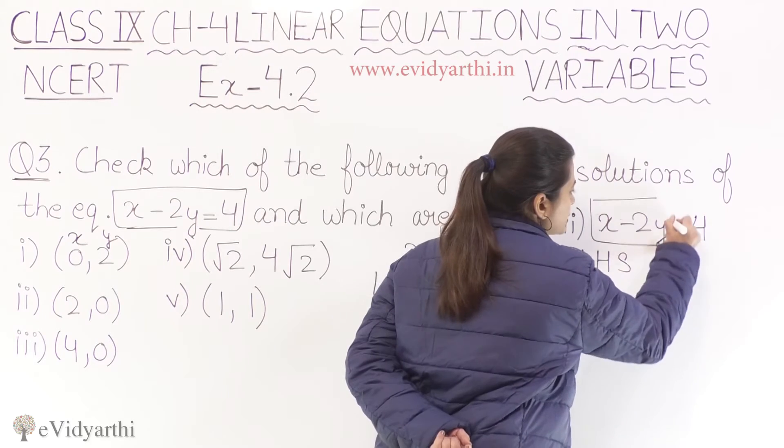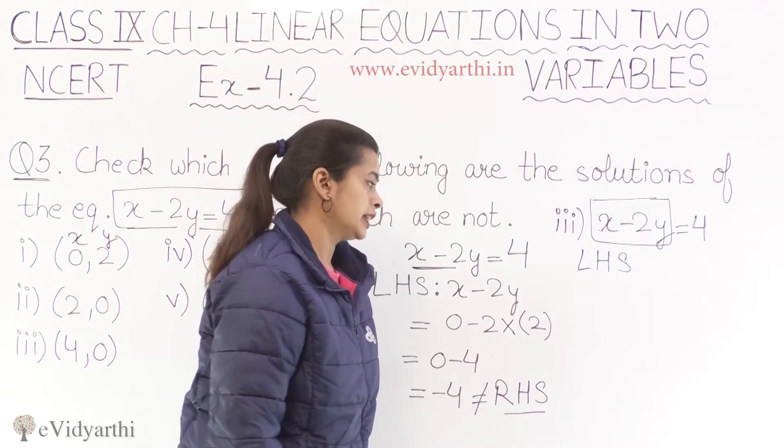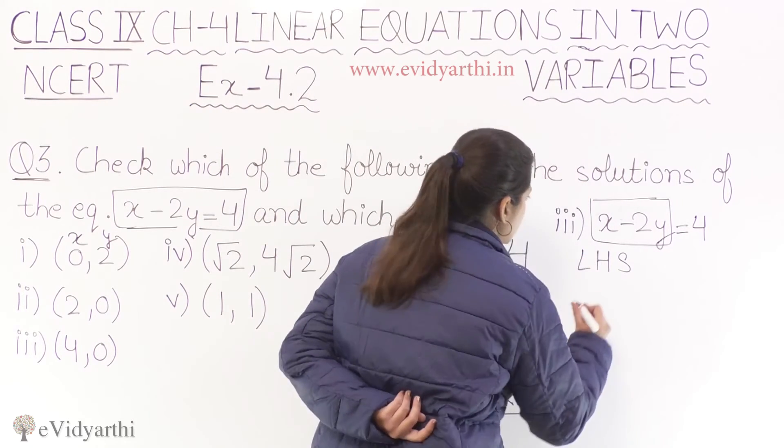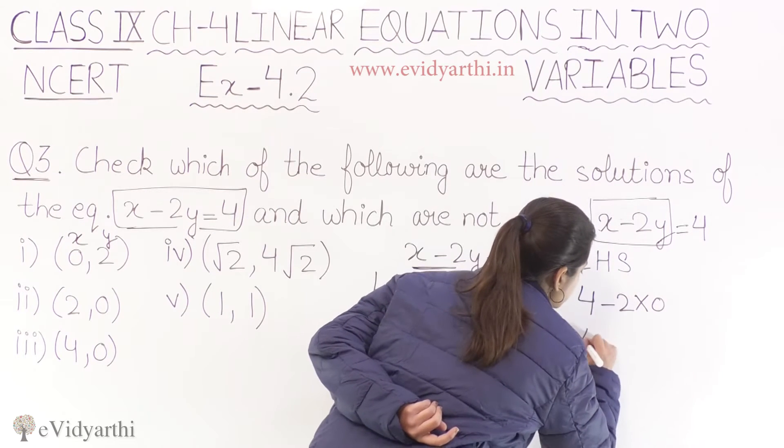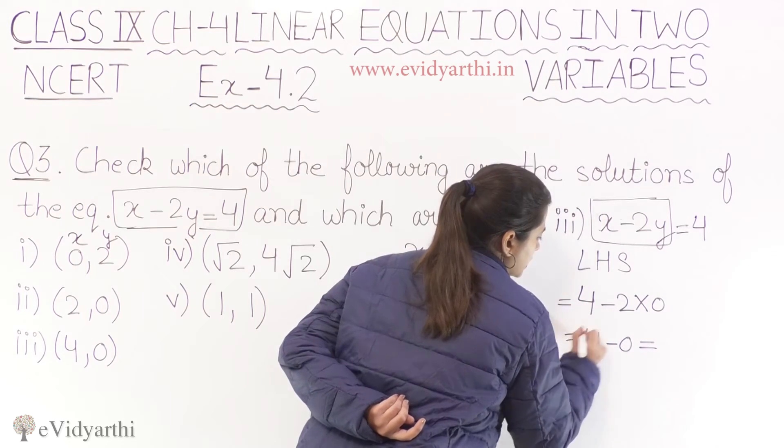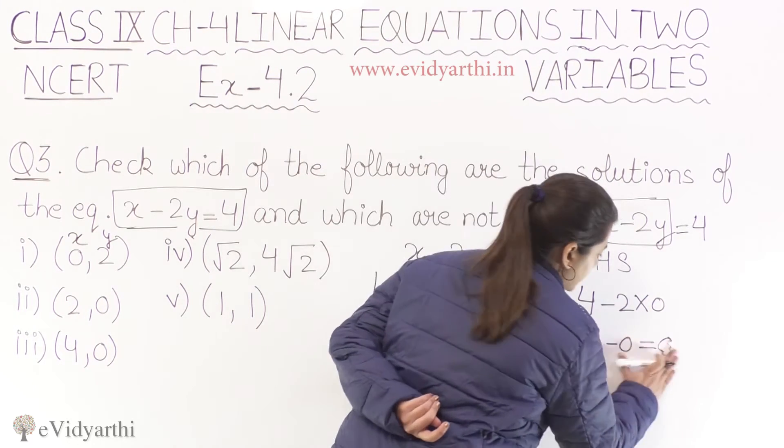Ab kya karne wale hai? Left hand side pe hamara paas kya hai? Ulte haath pe hamara jo bhi expression hai, usi ko left hand side se proceed karte hai. So what we have? We have x as four. Four minus 2 into zero. To kya aa jaega? Four minus zero. Equals to? Aur yahaan paas zero aagya. Now sorry, four aagya.